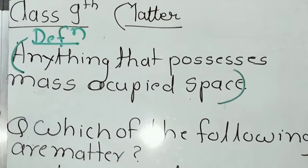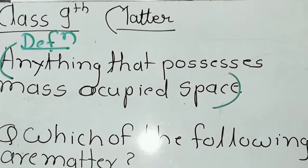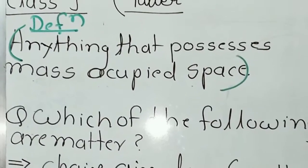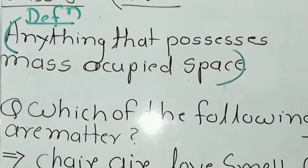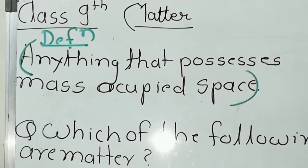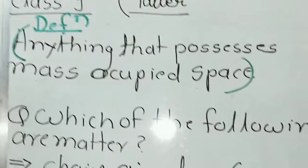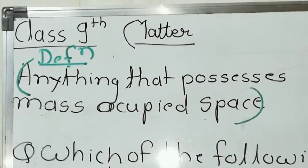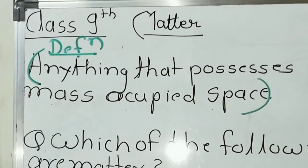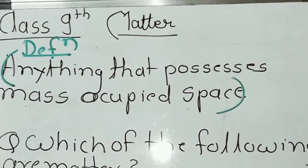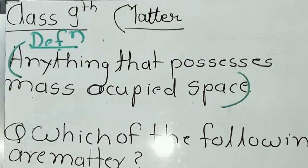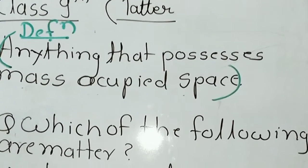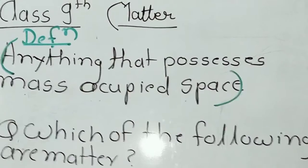Matter is everything around us that possesses mass and occupies space — that is called matter. Please observe: a wall has some mass and occupies some space. Curtains also have some mass and occupy space. A TV also has mass and occupies space. Leaves also have some mass and occupy space. There are a number of examples around us related to matter.